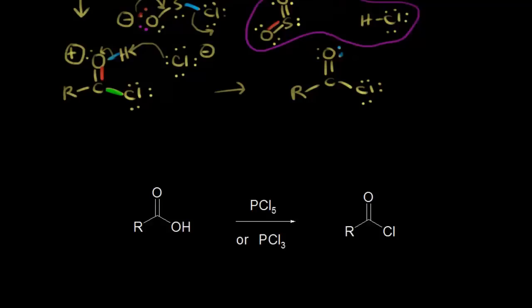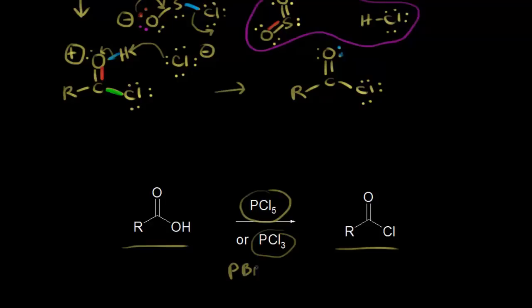Let's look at two other ways to make an acyl chloride. Starting with a carboxylic acid, you could add phosphorus pentachloride (PCl5) or phosphorus trichloride (PCl3), and both of those will give you an acyl chloride as well — the mechanism is pretty similar. We could also add PBr3, phosphorus tribromide, which would put a bromine instead of a chlorine and form an acyl bromide. We'll see a use for this reaction in a later video.